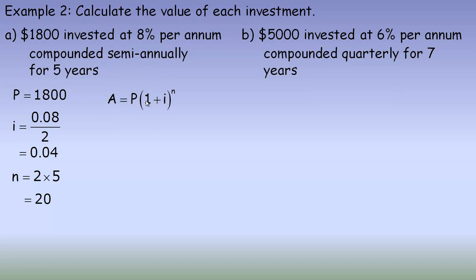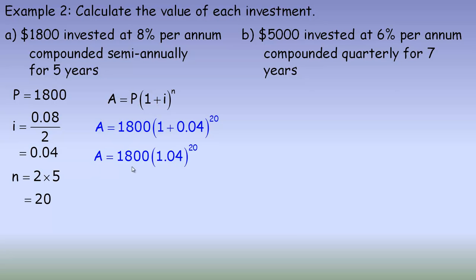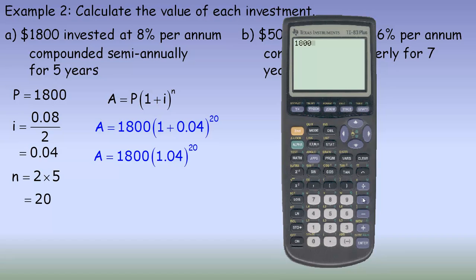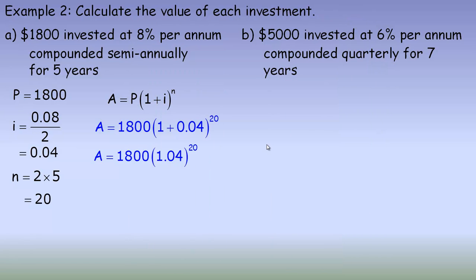So here's the formula: A equals P times 1 plus i to the n. Filling in the values: P is $1,800, i is 0.04, and n is 10. Adding 1 plus 0.04 gives 1.04. Using the calculator: 1,800 times 1.04 to the power of 10. Some people like to put 1.04 in brackets — it gives exactly the same result. That comes to $3,944.02. The digit after the 2 is less than 5, so it does not round up, giving us $3,944.02.